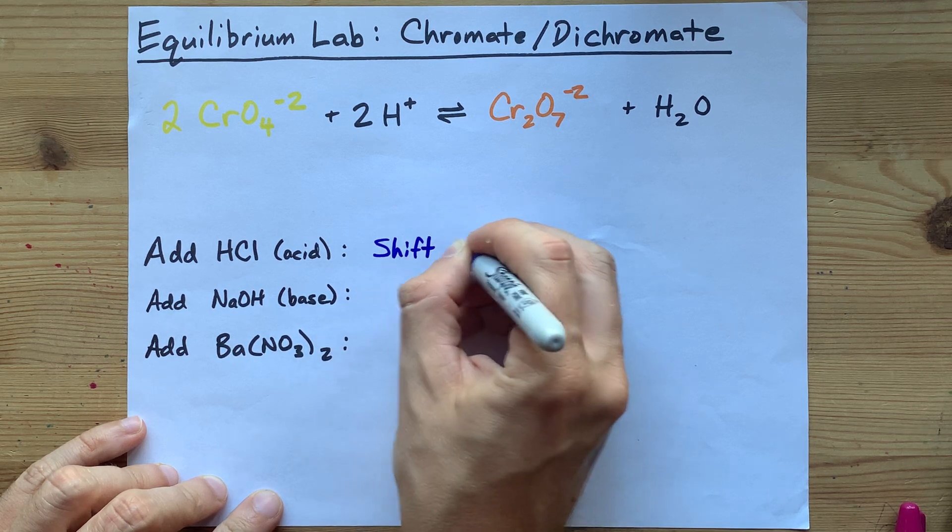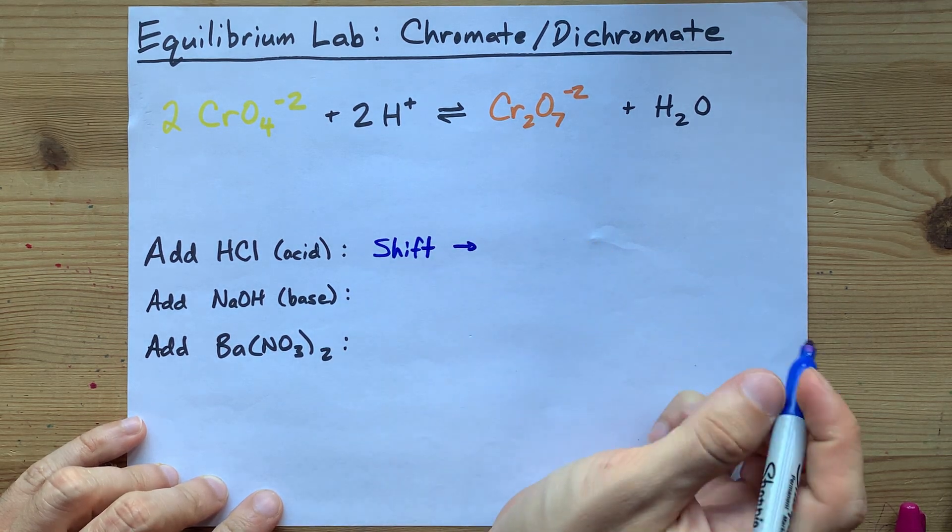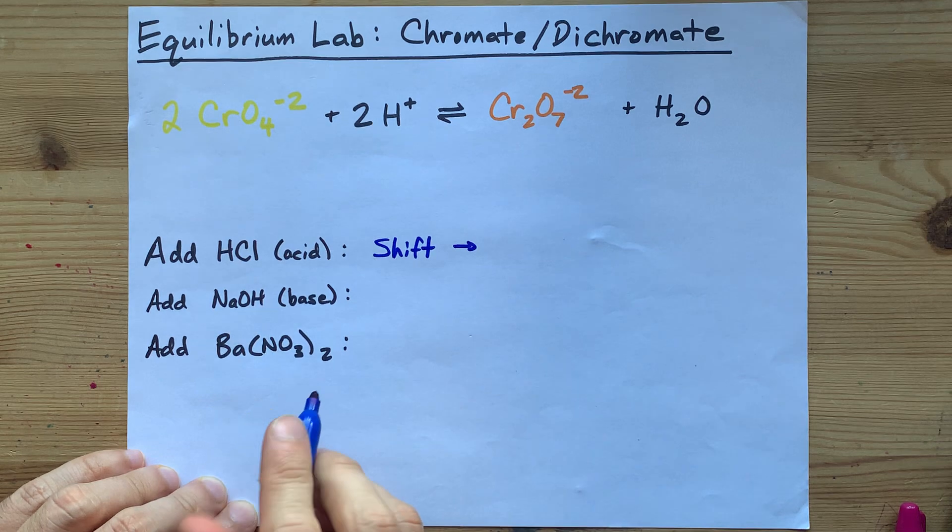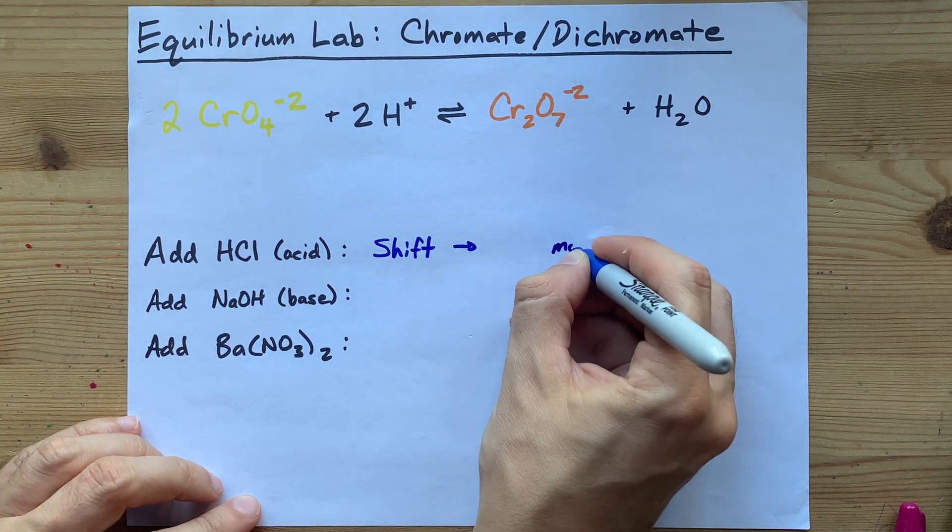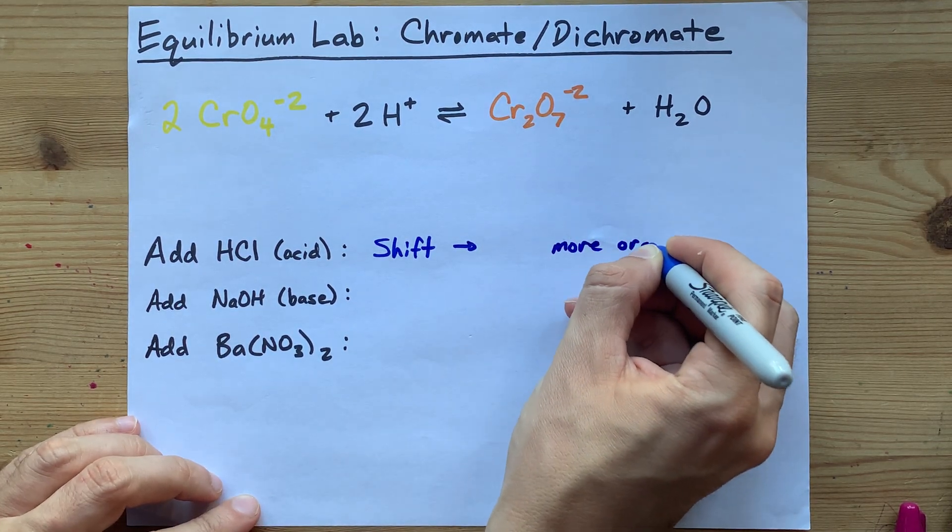You will end up shifting the equilibrium slightly to the right because you're adding a reactant. And that means that the color should appear more orange.